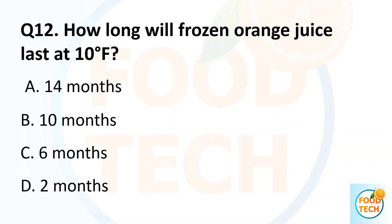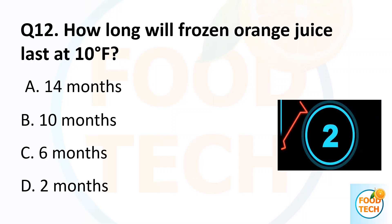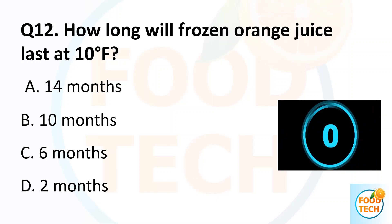Question 12. How long will frozen orange juice last at 10 Fahrenheit? A. 14 months. B. 10 months. C. 6 months. D. 2 months. Answer B. 10 months.